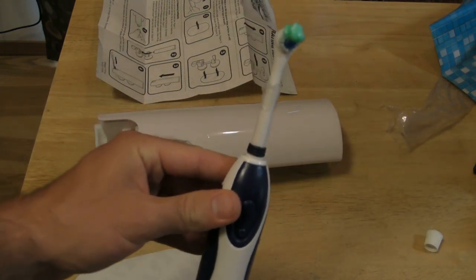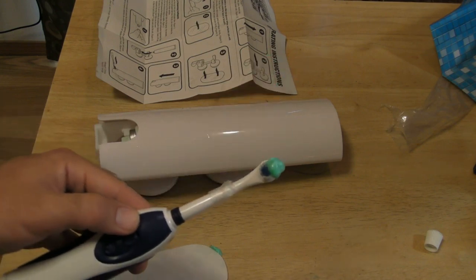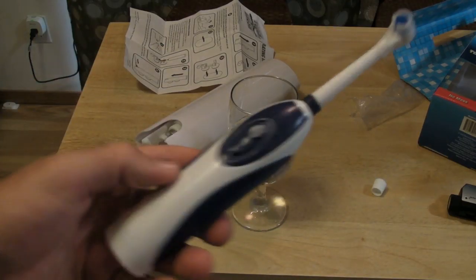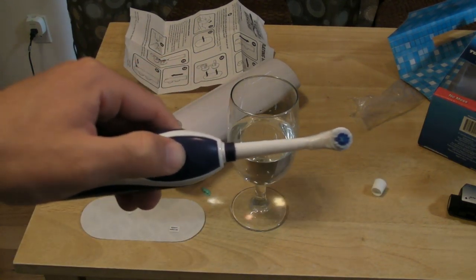So, next, I'm going to test this toothbrush, just because it was in the package, and see how this works. Alright, so, I put two AA batteries in here, it's all ready to go, and I'm going to turn it on. So, here we go.